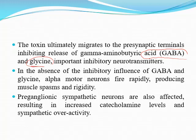This toxin inhibits inhibitory neurotransmitters, causing firing of the motor and autonomic nervous system. In the absence of the inhibitory influence of GABA and glycine, alpha motor neurons fire rapidly, producing muscle spasm and rigidity. The sympathetic and parasympathetic nervous systems are also involved, leading to release of catecholamines and sympathetic overactivity.